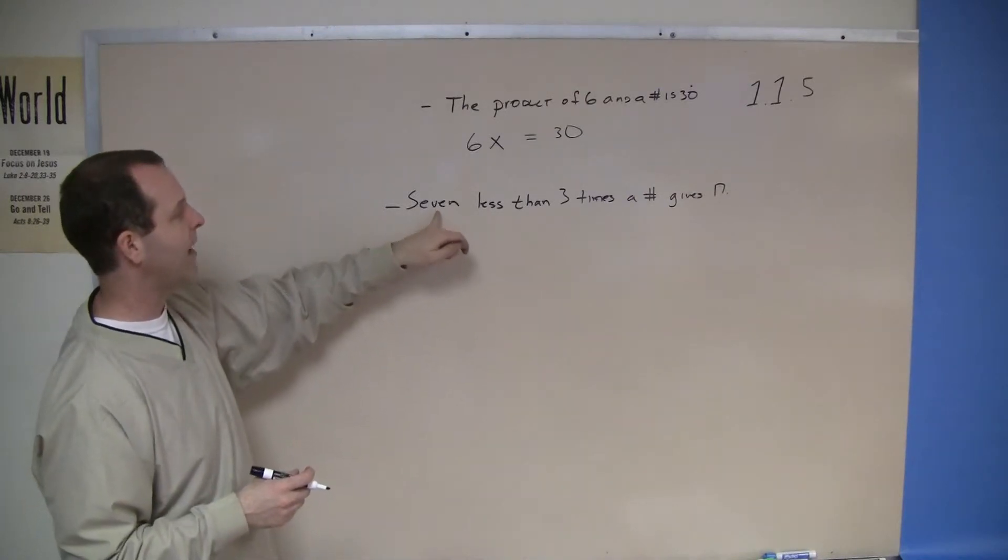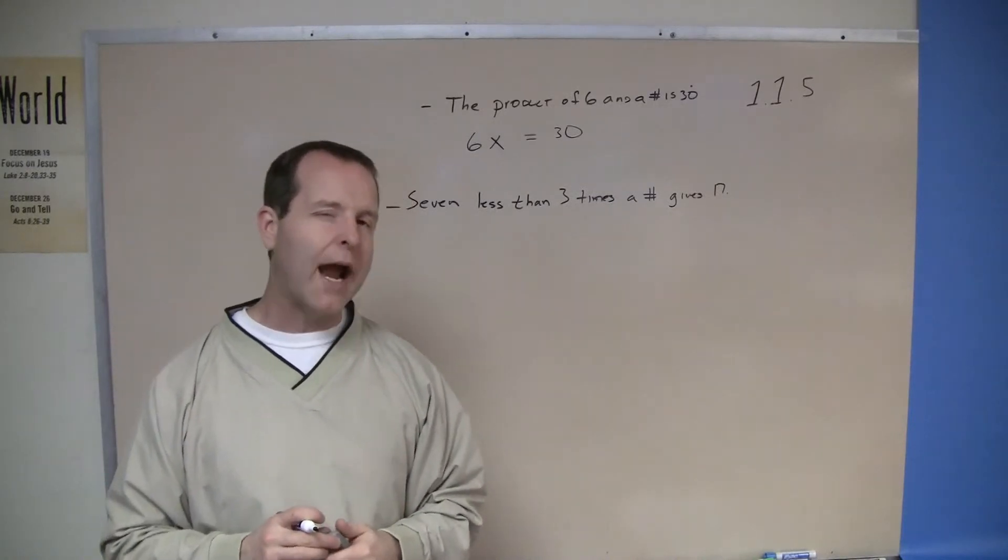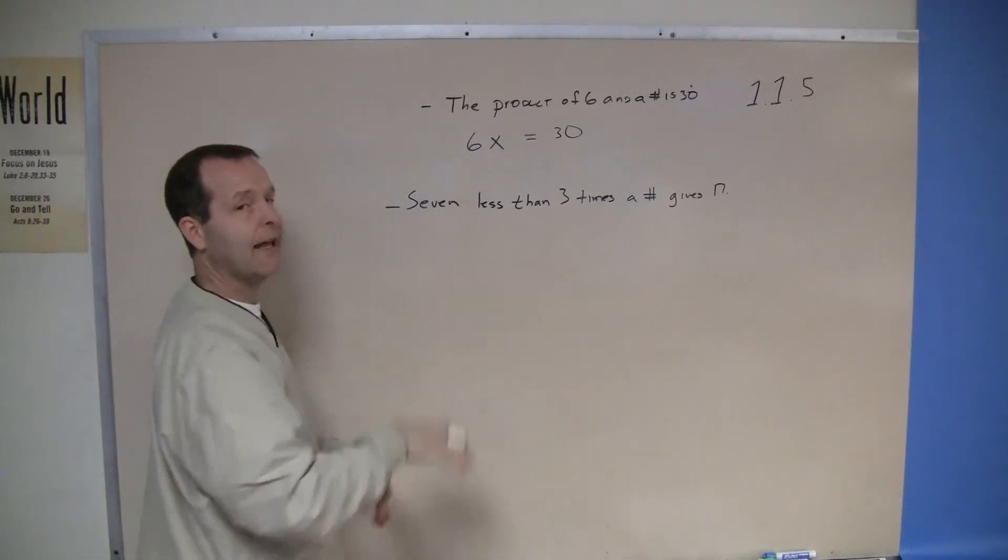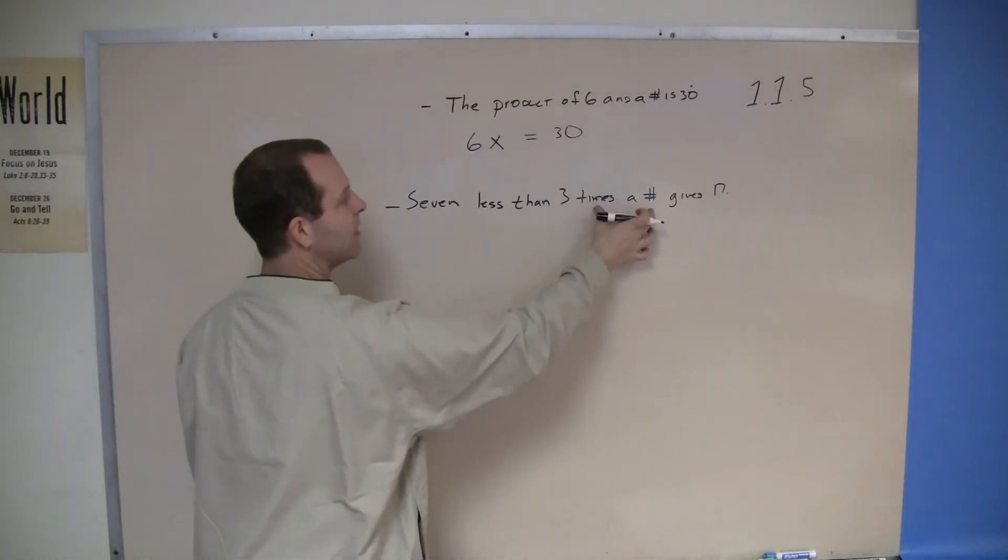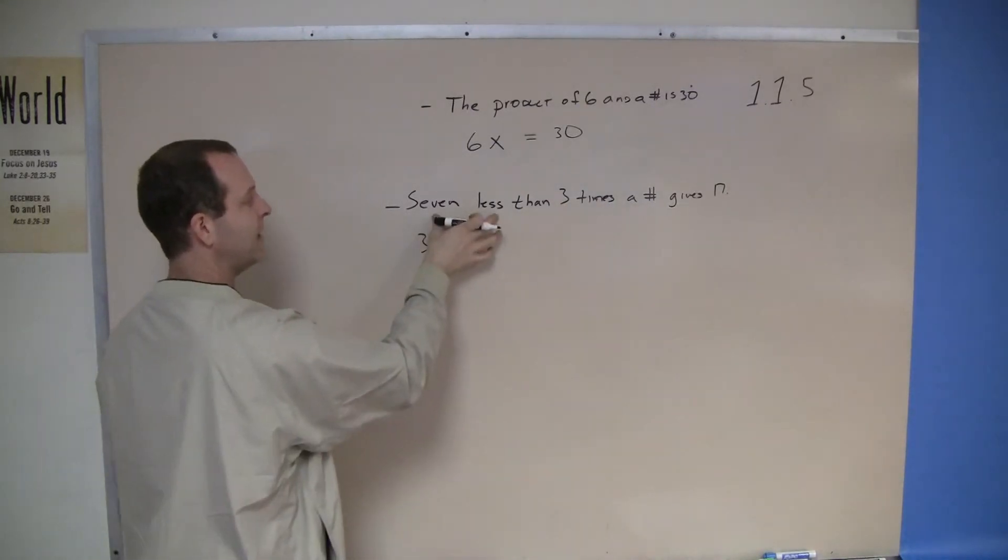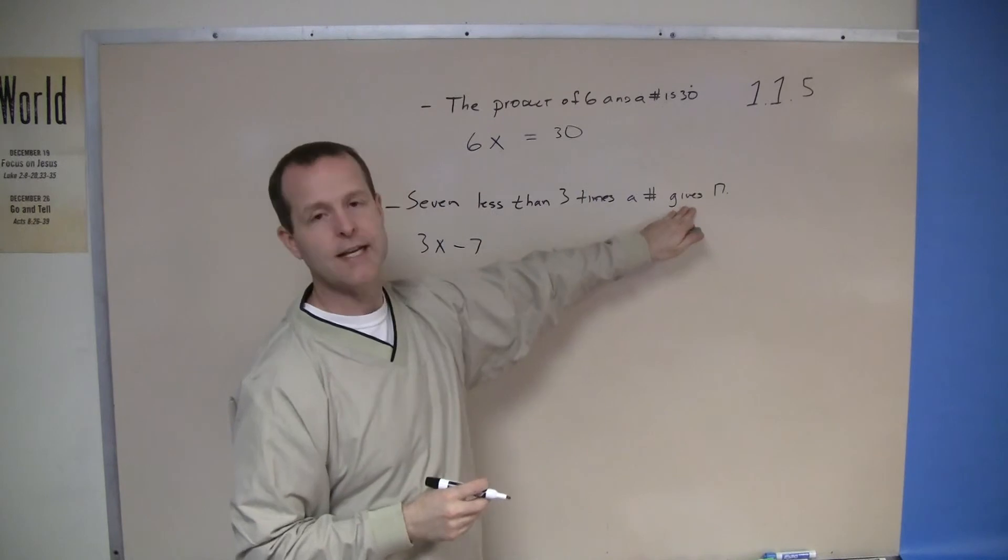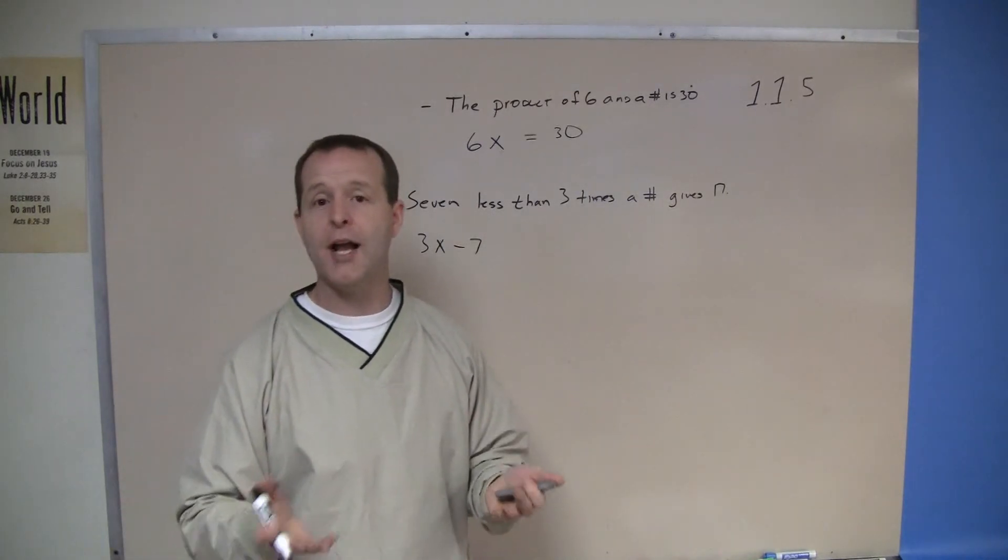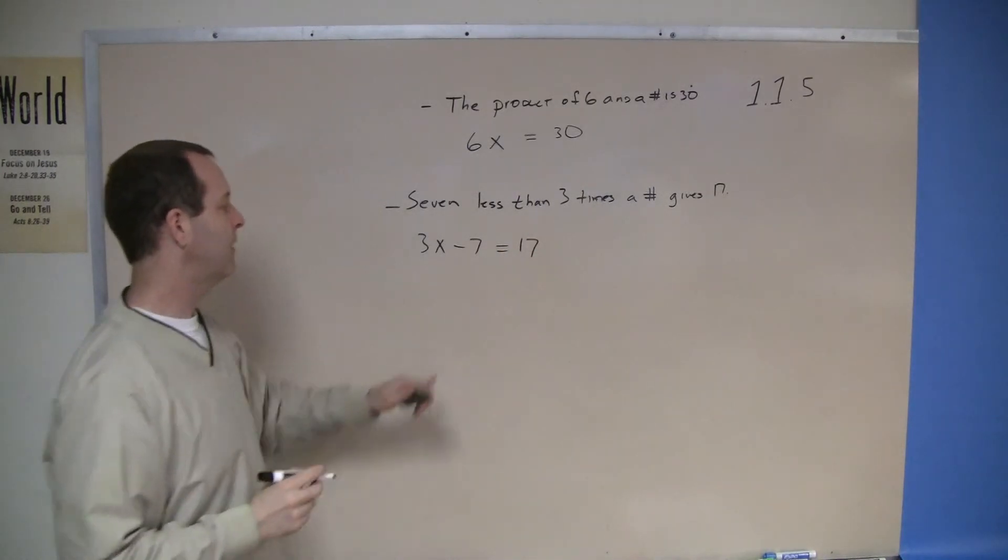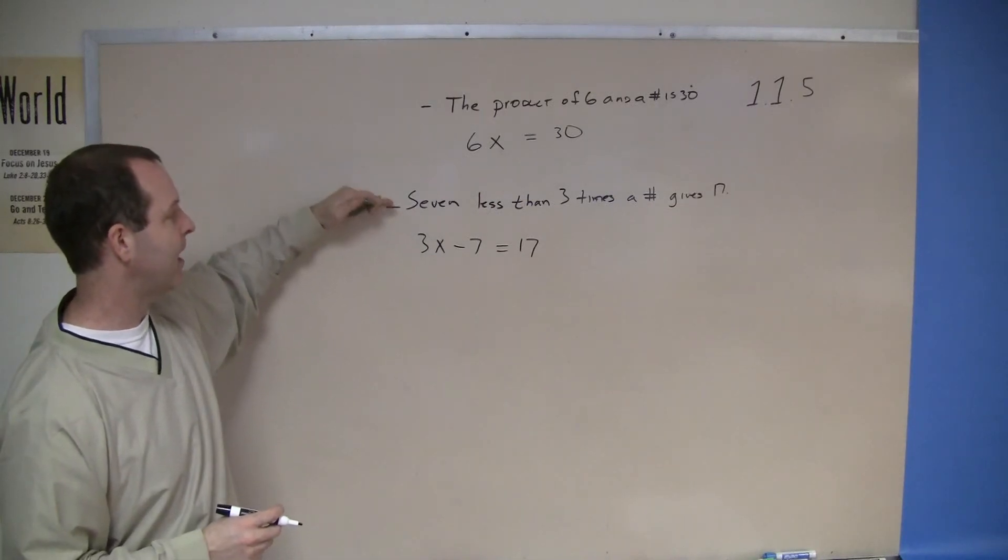In the second one, I have 7 less than 3 times a number gives 17. Now remember, this is one of those subtraction ones, so I have to remember which way do I subtract. This is saying 7 less than something—3 times a number. So I'm going to start with 3 times a number. 7 less than this is 3x minus 7. And the phrase says 'gives', which also implies 'is', or provides a result in 17. So I have the equation 3x minus 7 equals 17, which is the same thing as written in this English phrase.